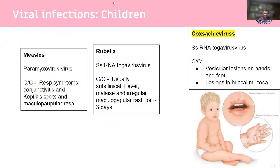For viral infections in children, you have mumps, measles, and rubella - all covered by the MMR vaccine. The most important thing to know is that they're in the MMR vaccine. Coxsackievirus is more high-yield - it classically affects the hands, feet, and mouth - that condition is called hand, foot, and mouth disease. There was research into whether coxsackievirus is a transformation virus involved in type 1 diabetes, but nothing conclusive has been established.